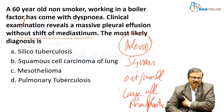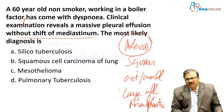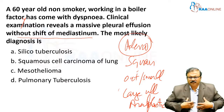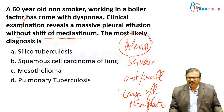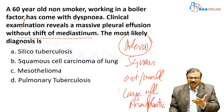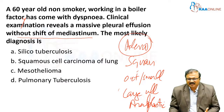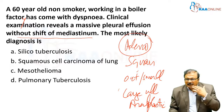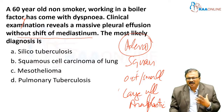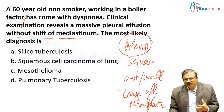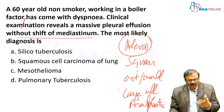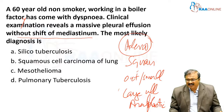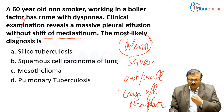Squamous cell carcinoma can occur in non-smokers and is usually a central lesion. Small cell carcinoma can be central or peripheral. The common feature of small cell carcinoma is more paraneoplastic manifestations. The most common paraneoplastic manifestation is endocrine — it can be Cushing's syndrome, SIADH, or various neurological manifestations.